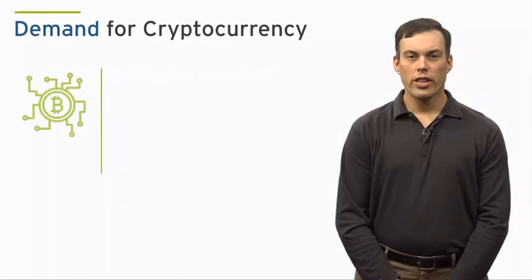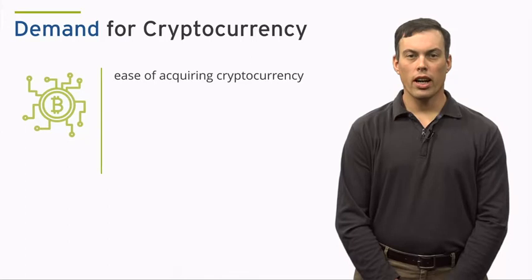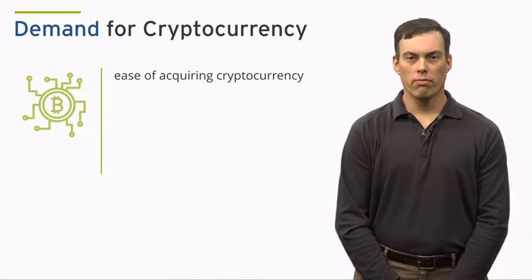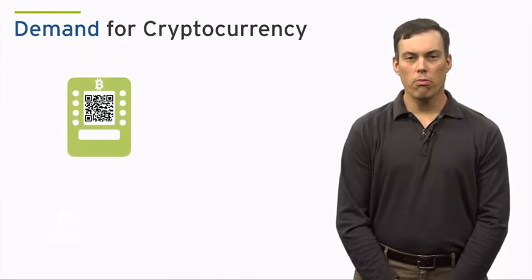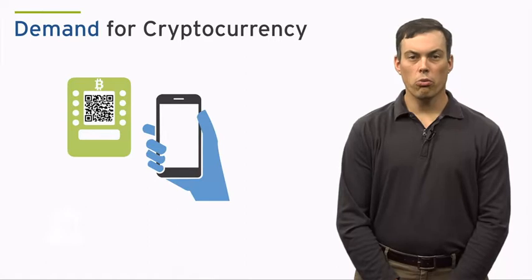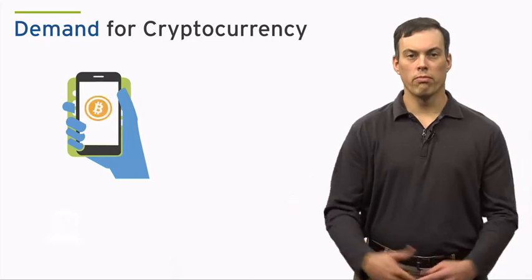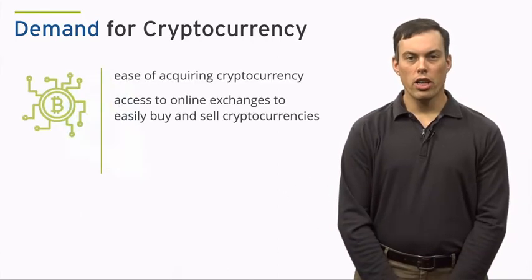The first is the ease with which you can now acquire cryptocurrency. In the early days of Bitcoin, buying and selling the cryptocurrency required a fairly high degree of technological sophistication. But now, if you live in a major metropolitan area, chances are you can walk to a nearby Bitcoin ATM, where all you have to do is download a free digital coin wallet, insert the desired amount of cash, place your phone up to the scanner, and voila, you own Bitcoin. In addition, consumers have access to dozens of online exchanges that make buying and selling cryptocurrencies pretty easy.